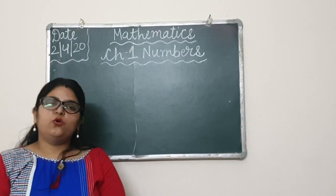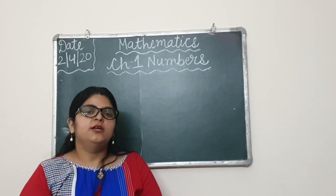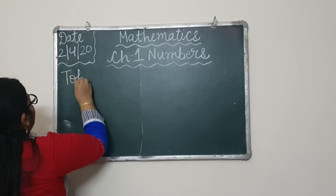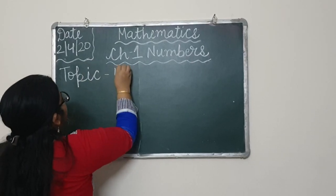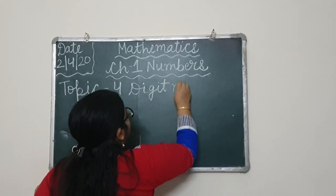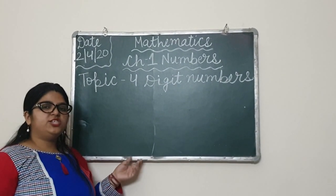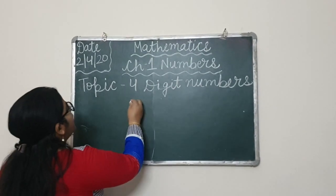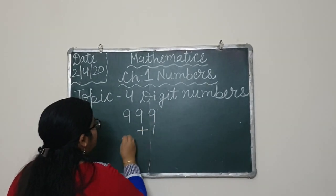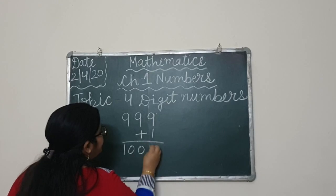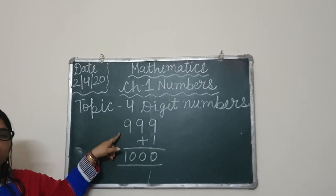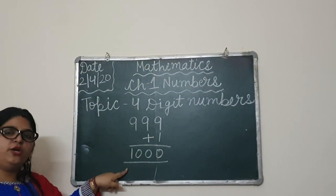Now let us know about 4-digit numbers, because our topic is 4-digit numbers. When you add 1 to the largest 3-digit number, we get a 4-digit number.